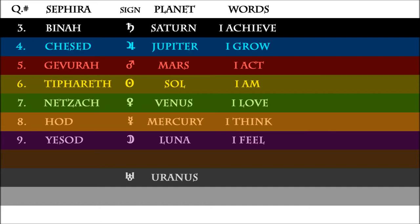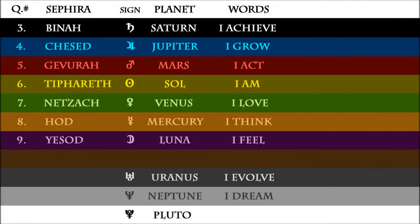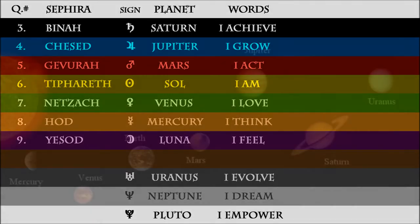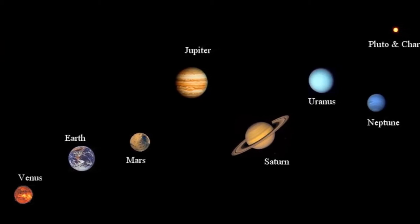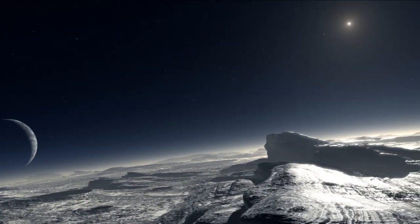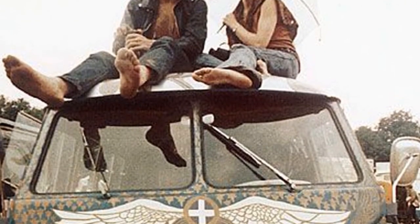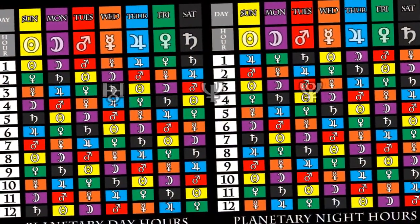Just for your purposes, Uranus says: I evolve. Neptune says: I dream, in a very Vishnu-like way. And Pluto says: I am power. What's interesting about the external planets is that because they move so slowly — taking years to move from sign to sign — they tend to be more generational influences as opposed to day-to-day or month-to-month things. Every day is a different planetary day, but we don't include the exterior planets in the same way.